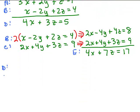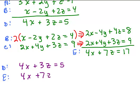Equation D was 4X plus 3Z equals 5, and equation E was 4X plus 7Z equals 17. This is now a system with only two variables. The addition method looks easy here — if I multiply one of these equations by negative 1, the X terms will cancel. I'm going to multiply the top equation by negative 1 since I prefer positive coefficients.